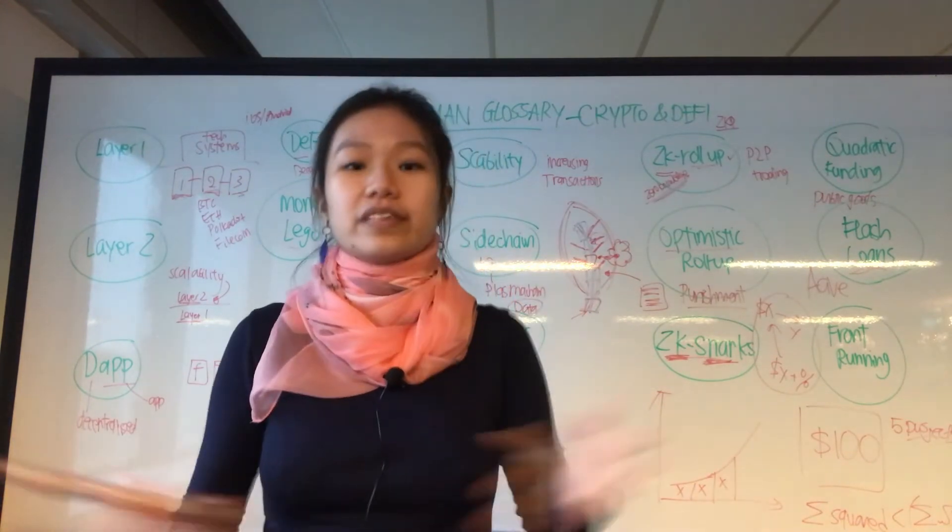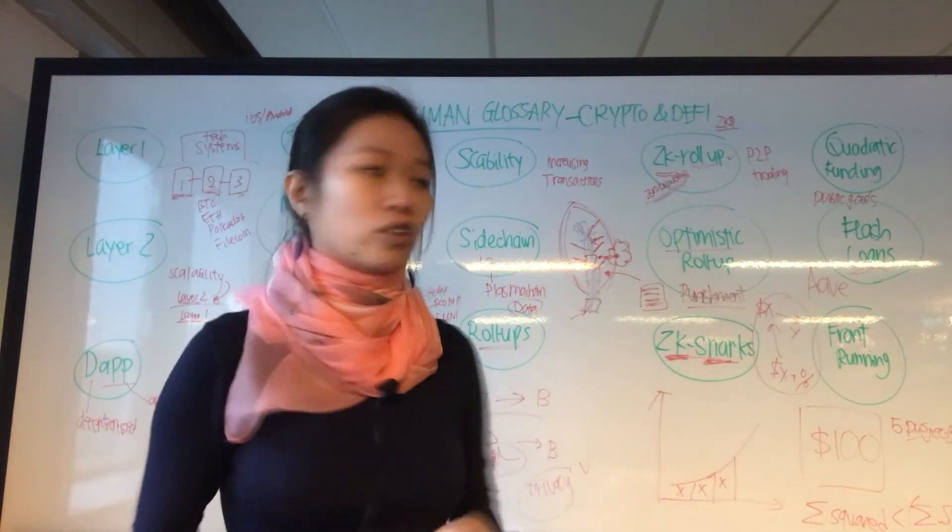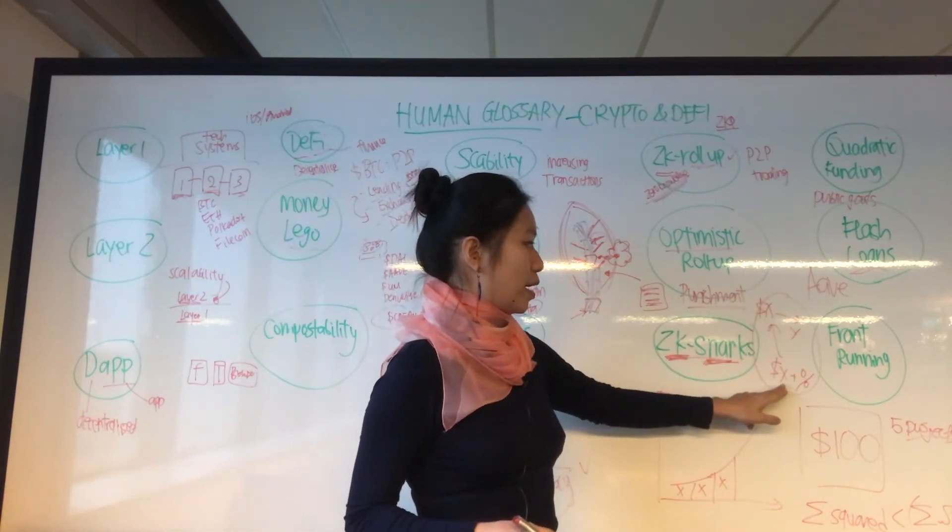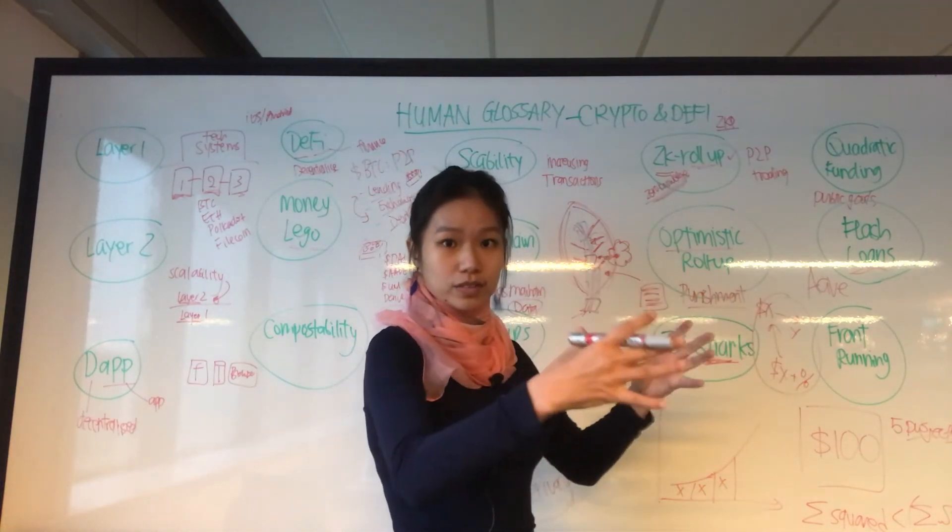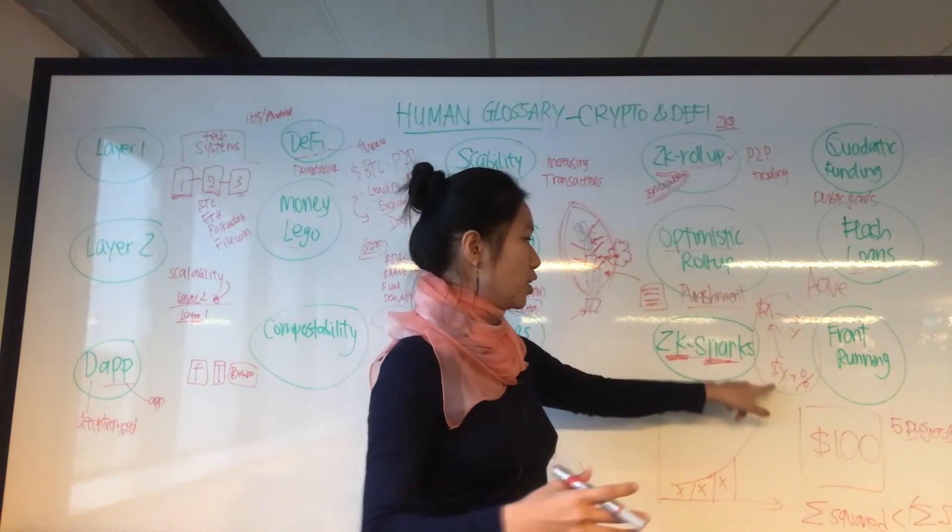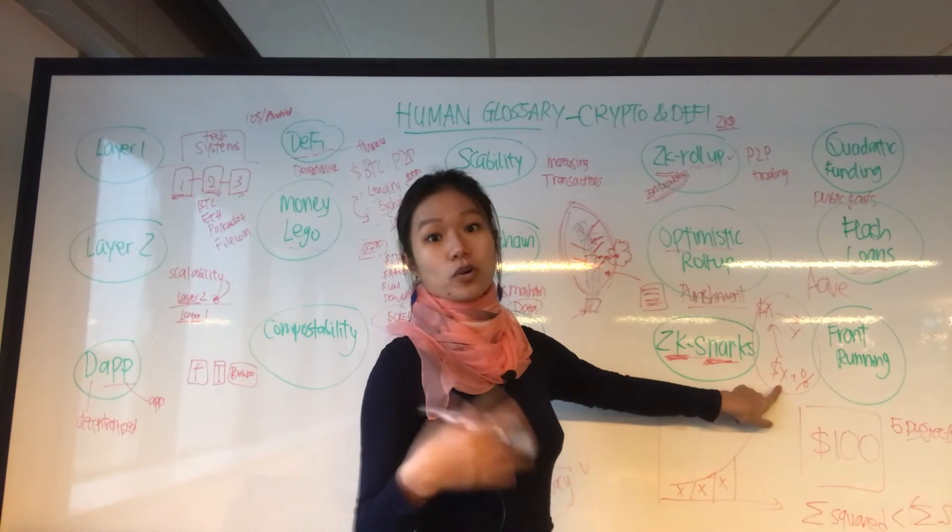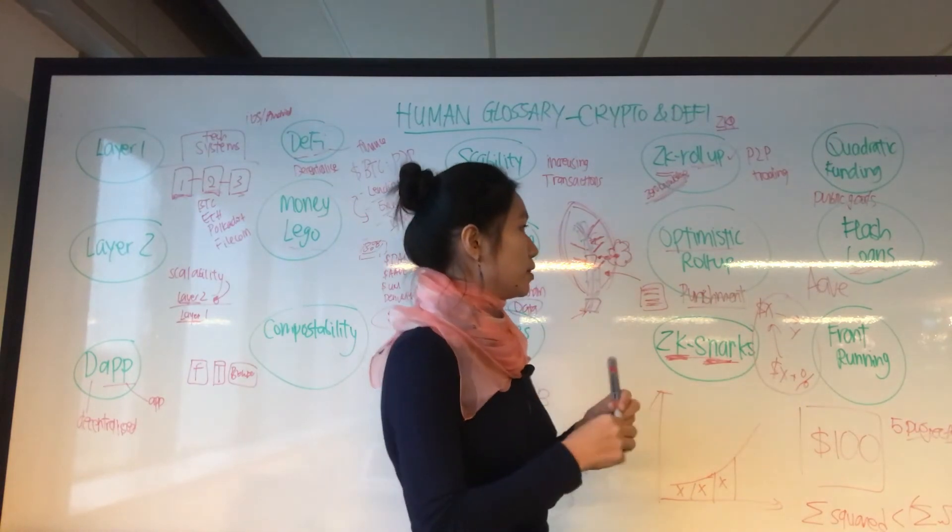It is executed by smart contracts. If the smart contract calculates that by the end of this validation you cannot repay X dollars you borrowed plus the percentage, then this loan will not be executed.